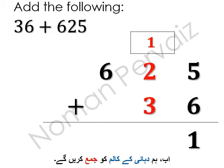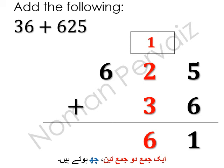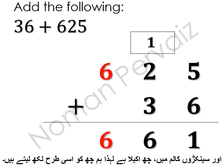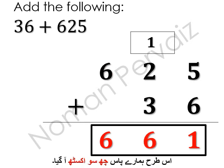Now we will add in the tens column. 1 plus 2 plus 3 is 6. And in the hundreds column, 6 is single so we write 6 as it is. So we have 661. It means that the sum of 36 and 625 is 661.